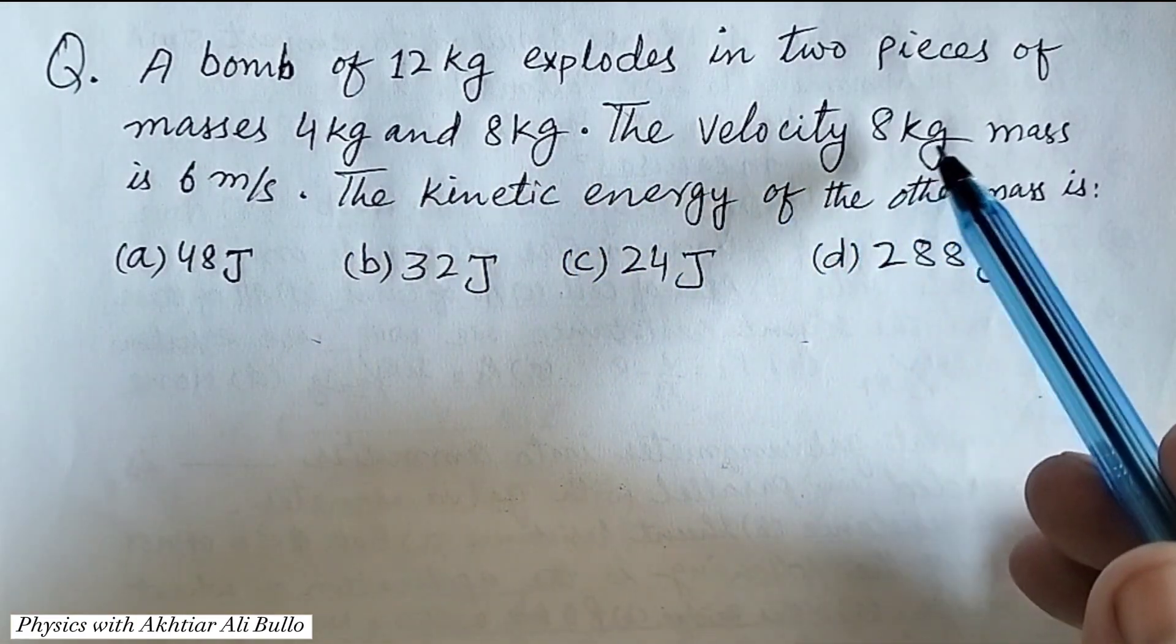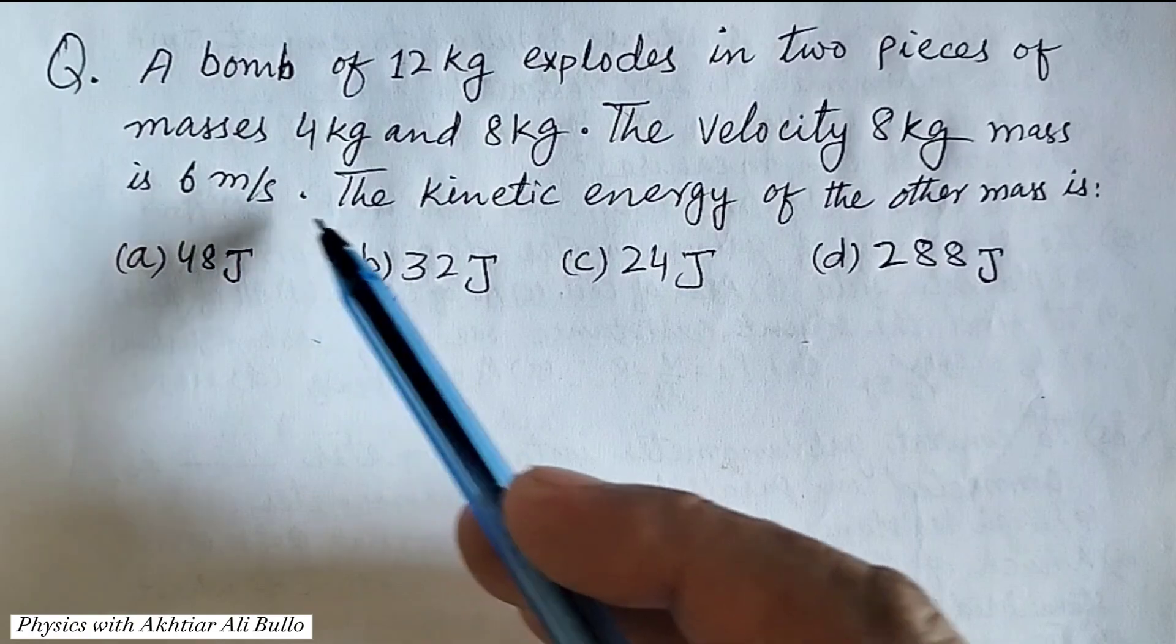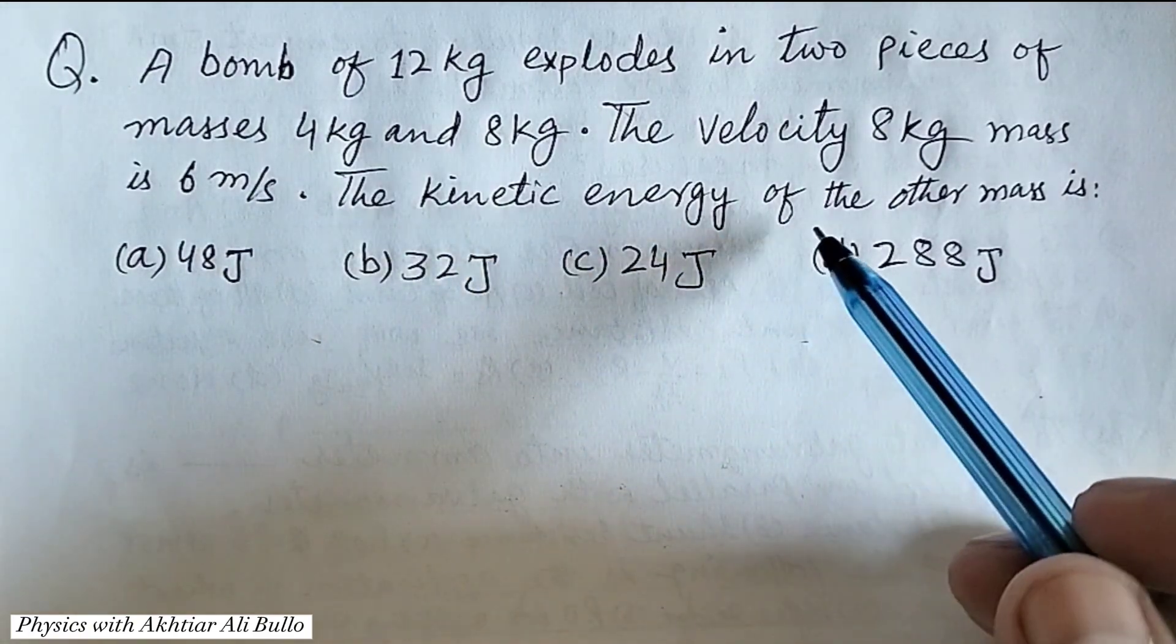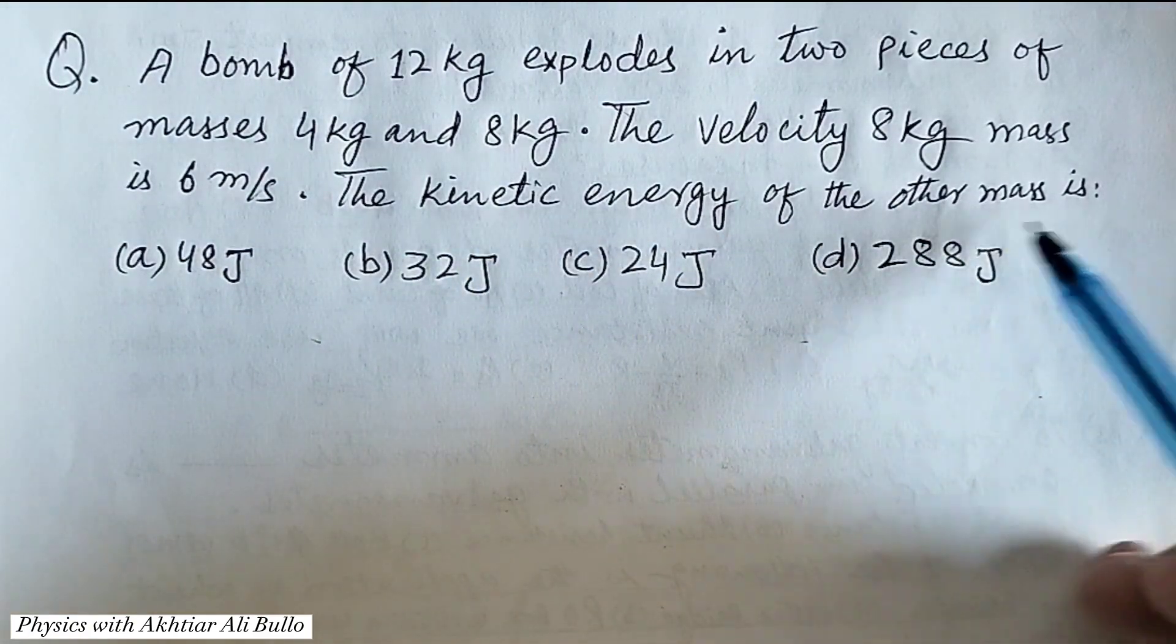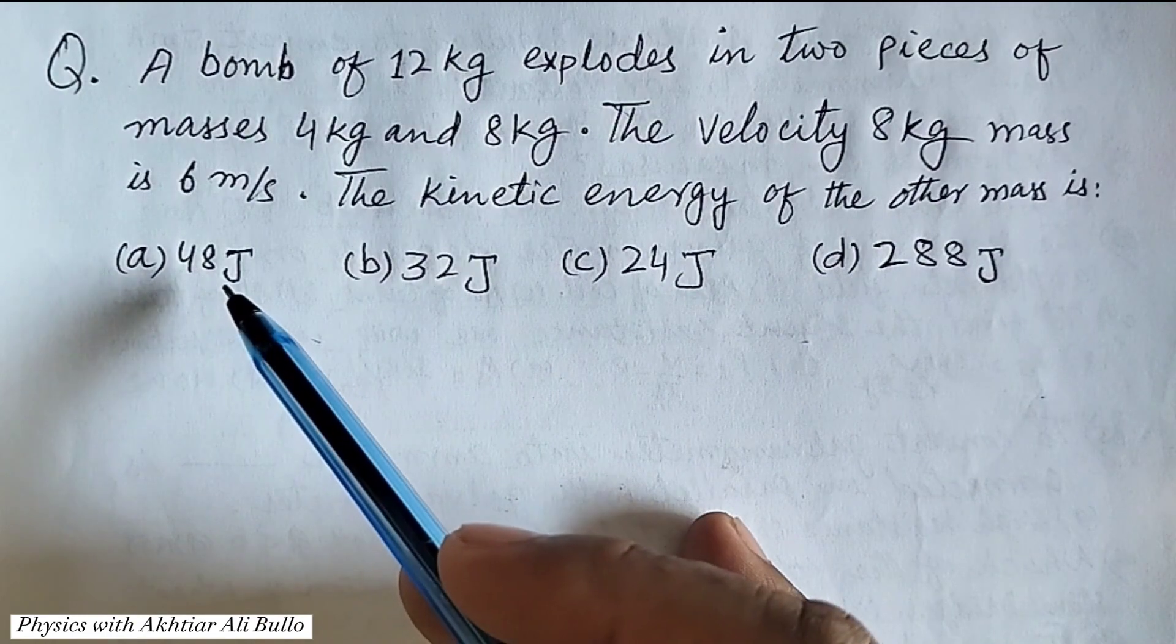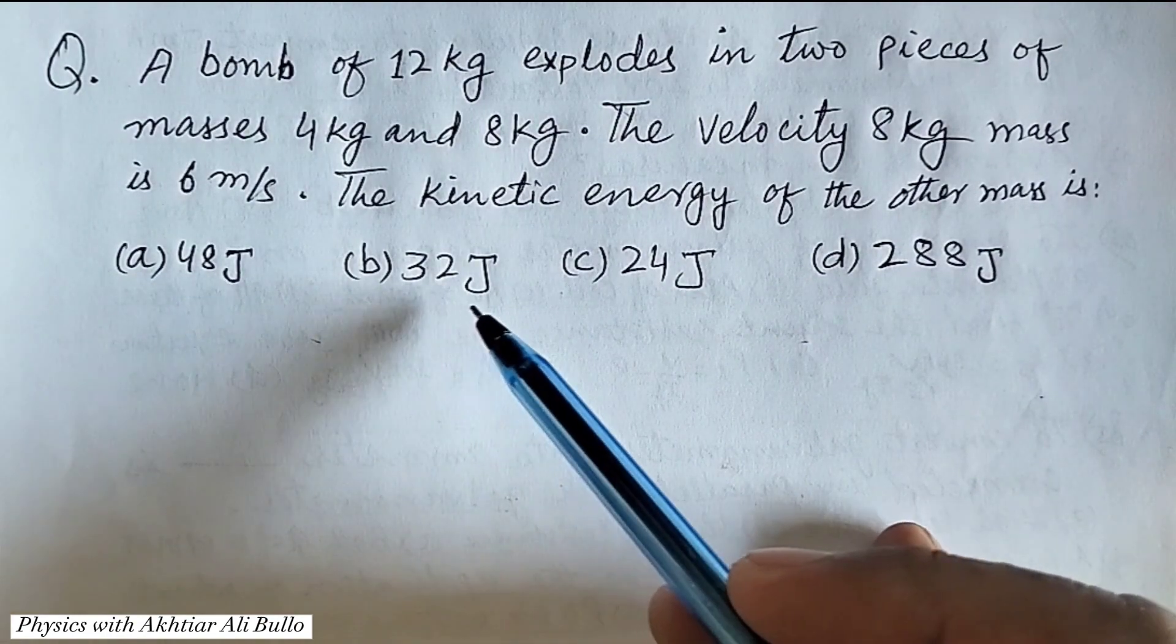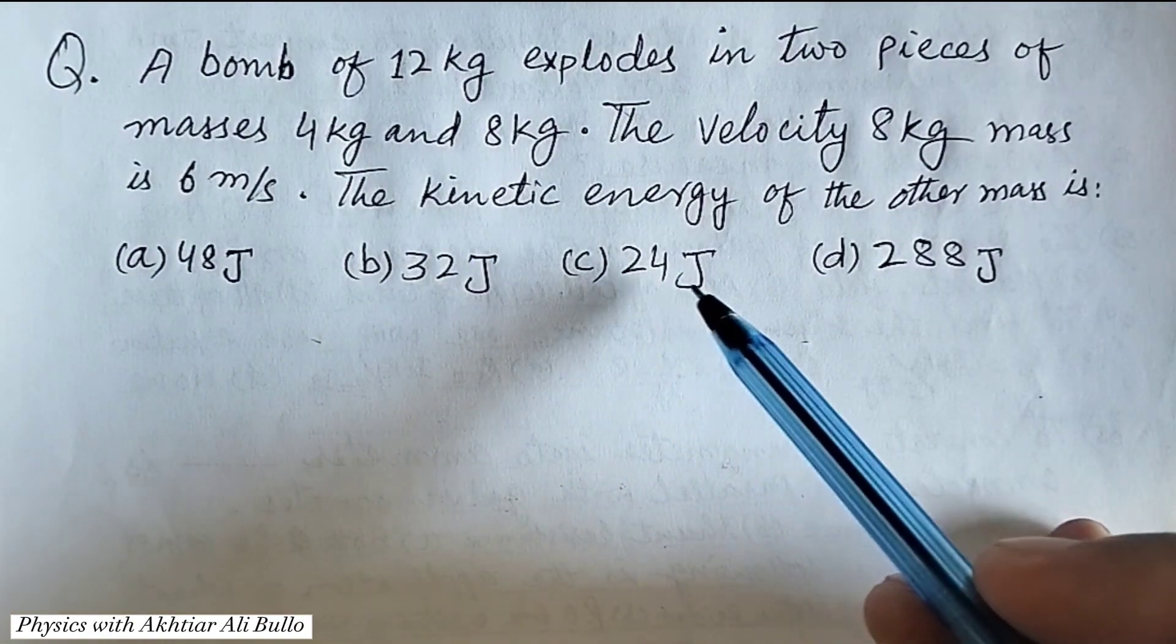The velocity of 8 kg mass is 6 meter per second. The kinetic energy of the other mass is: (a) 48 joule, (b) 32 joule, (c) 24 joule,